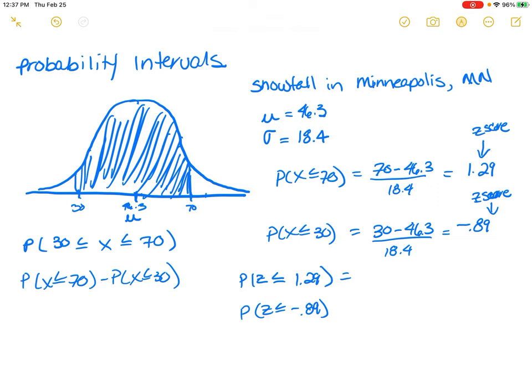And so when we look these two probabilities up, we find that the probability that Z is less than or equal to 1.29 is equal to 0.9015.